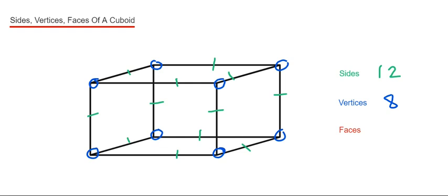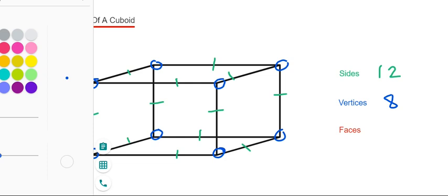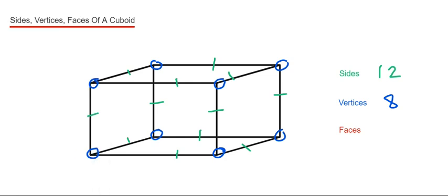And finally we've got our faces. The faces are the surfaces which make the cuboid. So we have 1 at the bottom, another 1 at the top, that's 2. We've got 1 at the back, that's 3. 1 at the front, that's 4. We've got 1 on the left-hand side, that's 5. And 1 on the right-hand side, which is 6. So we have 6 faces.